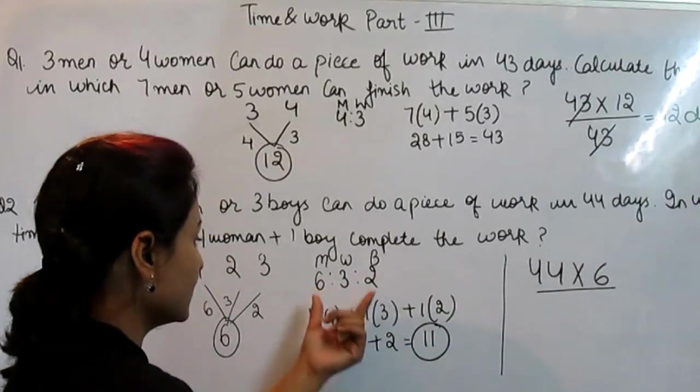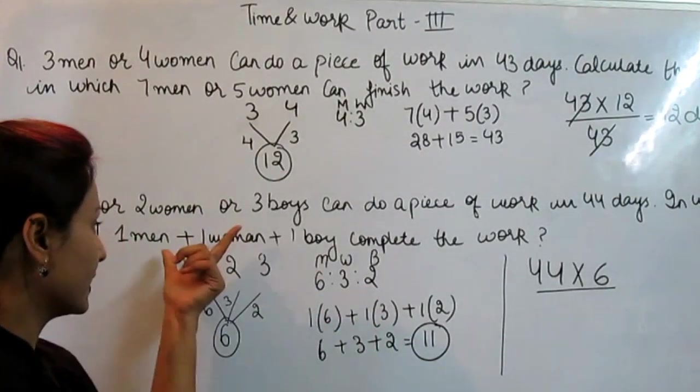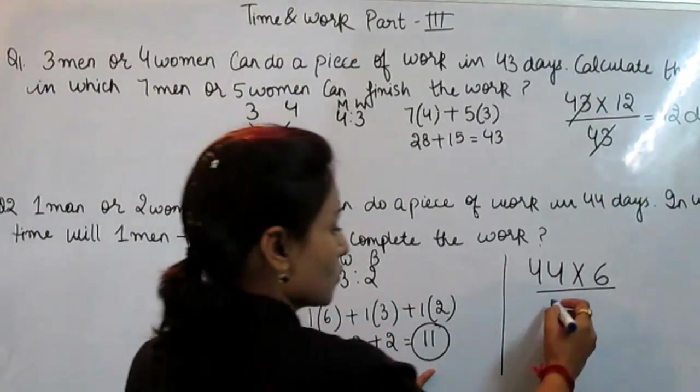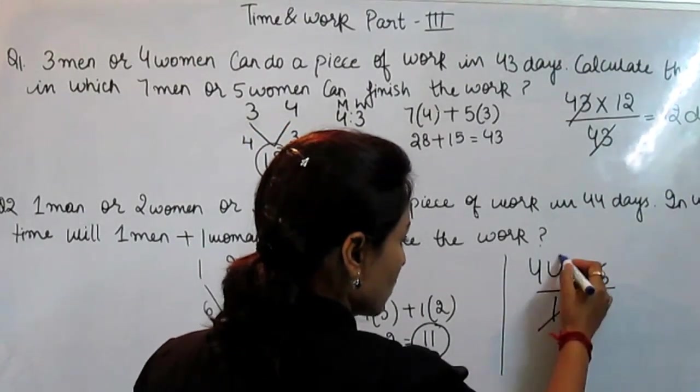And when we put all this ratio in this equation, we get 11. So we put 11 here. When we solve this,